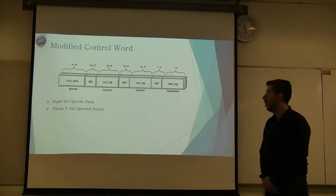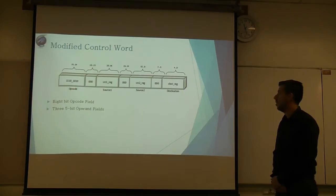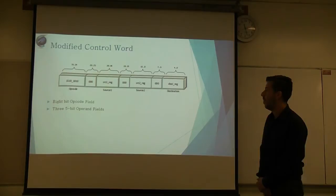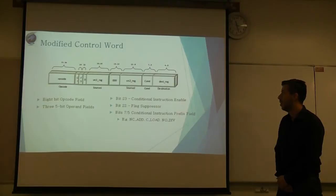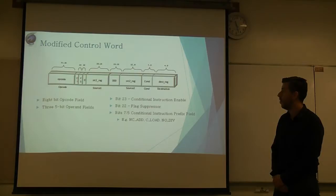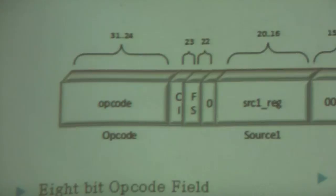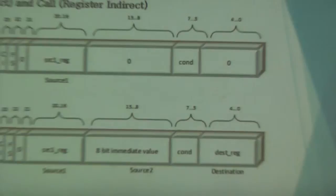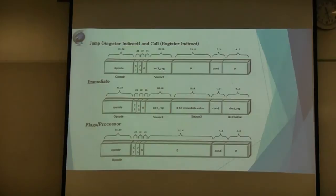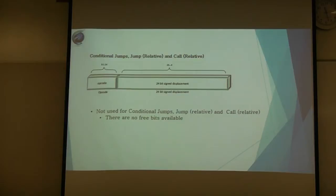For our conditional setting of flags, it gives you the ability to prevent the flag from being updated during the execution of the instruction. When combined with our conditional execution of instructions, it can implement a vast amount of instructions. If we take a look at this triple operand control word, we see that we have an 8-bit operand code field, three 5-bit operand fields, but we still have 9 bits unused. So this is how we decided to implement it. For our 23rd bit, we're going to use a conditional instruction enable bit. We have a flag suppressor bit on bit 22, and our precondition bits are going to be located in bits 7 through 5. This is how we modified the other control words for our jumps, our immediates, and our flag processor. One of the things we couldn't do is we couldn't implement it on the conditional jumps and jump relatives and call relative, because we just didn't have any free bits to implement that on.